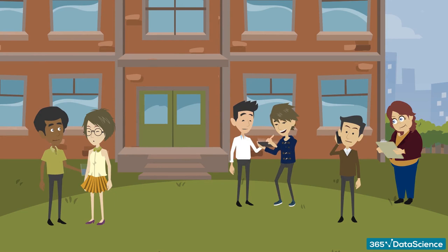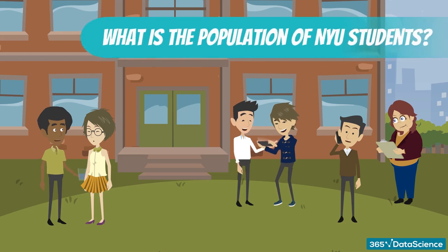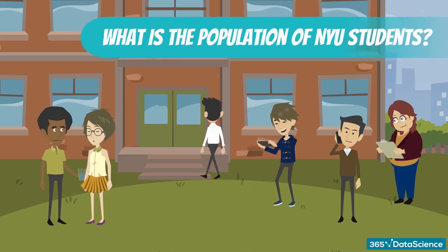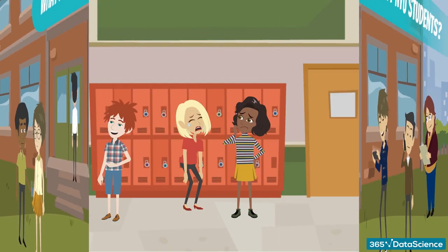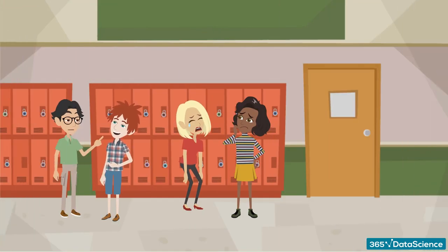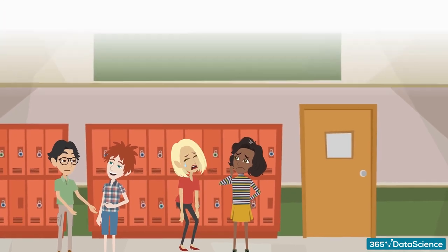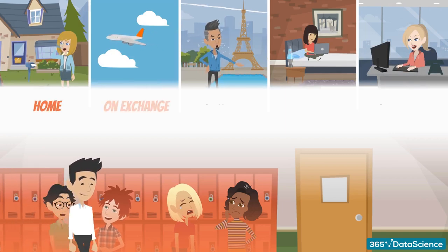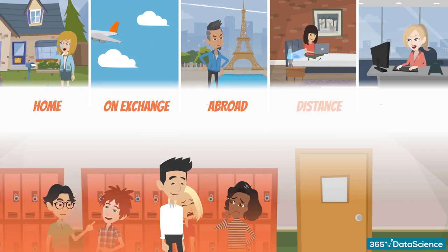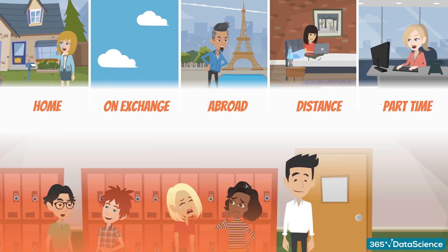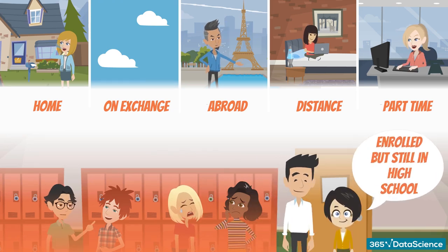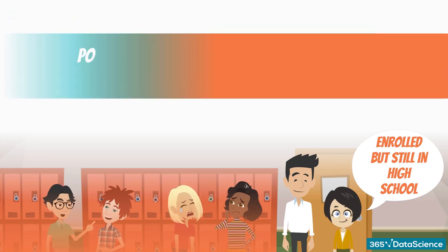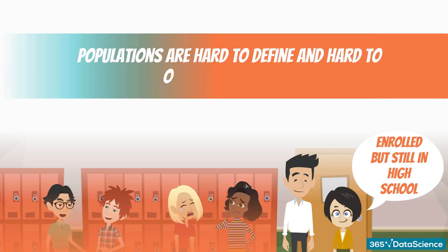Let's say we want to perform a survey of the job prospects of students studying at New York University. What is the population? You can simply walk into NYU and find every student, right? Well, surely that would not be the population of NYU students. The population of interest includes not only the students on campus, but also the ones at home, on exchange, abroad, distant education students, part-time students, even the ones who enrolled but are still at high school. Though exhaustive, even this list misses someone. Populations are hard to define and hard to observe in real life.